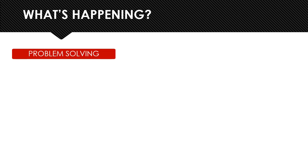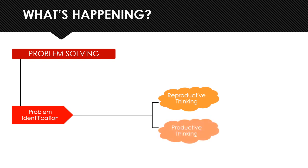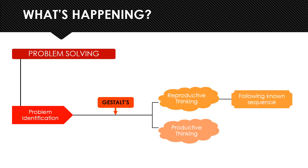What's happening here is that the participants are engaging in a cognitive process known as problem solving. The first step is problem identification, which leads to either reproductive thinking or productive thinking. Gestalt differentiates between these: reproductive thinking follows a known sequence or routine steps, whereas productive thinking uses insight and creativity to reach a solution. Interestingly, people usually start with reproductive thinking and stick to it unless they are left completely without a solution, at which point they turn to productive thinking — so productive thinking is not always automatic.